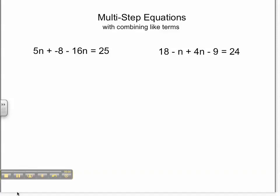This tutorial will involve solving multi-step equations that involve combining like terms. Let's look at our first sample problem. 5n plus negative 8 minus 16n equals 25.